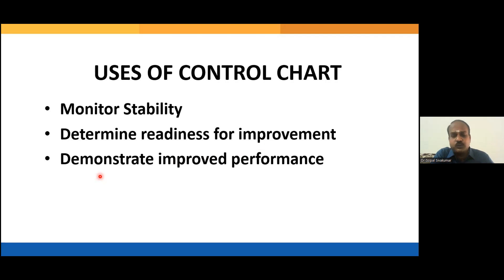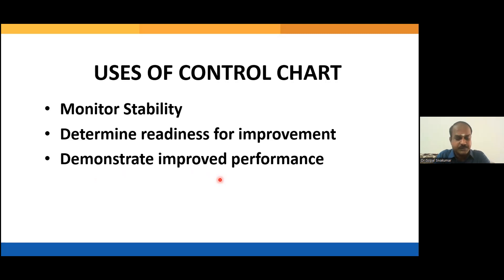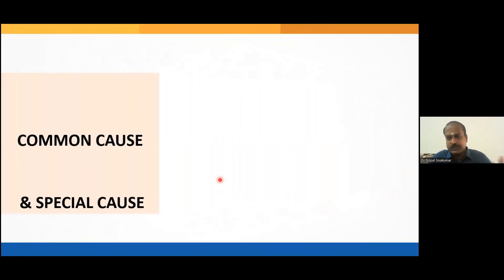We think of improving a process only when it is under statistical control. Third, a control chart can be used to visually demonstrate improved performance. After your project, you can visually convince your boss using a control chart. If the process has really improved and a control plan is established, you will see all the points comfortably falling within the control limit — clear evidence that your project has improved the process.